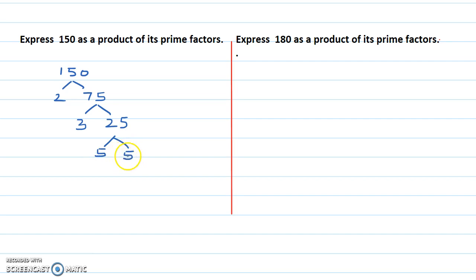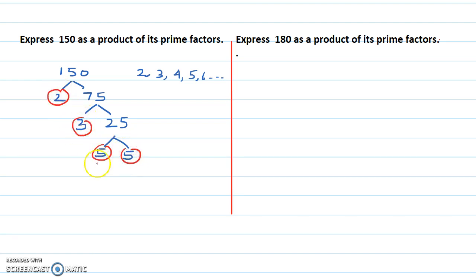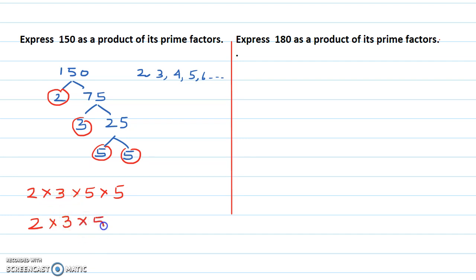Five times five equals 25. Always follow the order: two, three, four, five, six, and so on up to ten. Our prime factors are two, three, five, and five. Writing the answer: two times three times five times five. There is only one two and one three, so no index needed. Two fives gives five to the power two. Final answer: two times three times five squared.